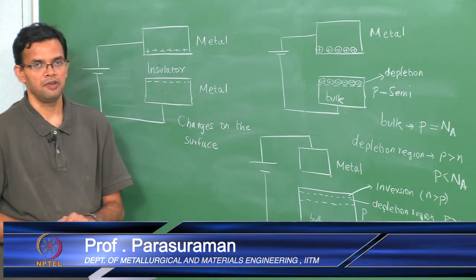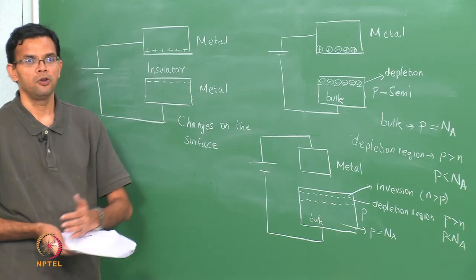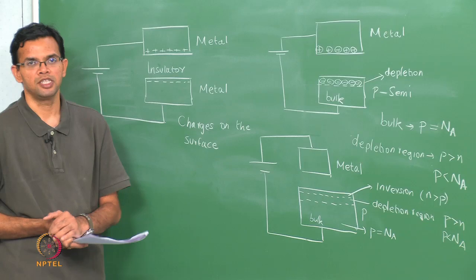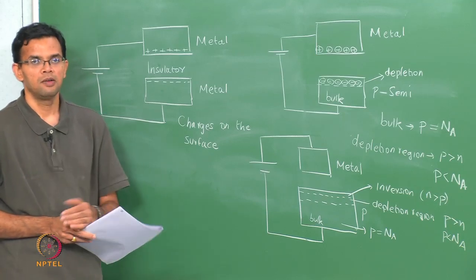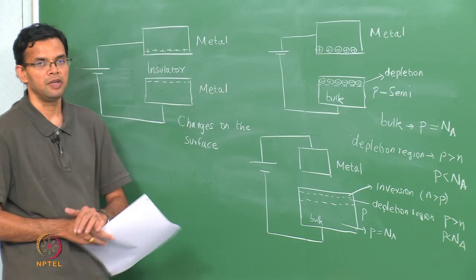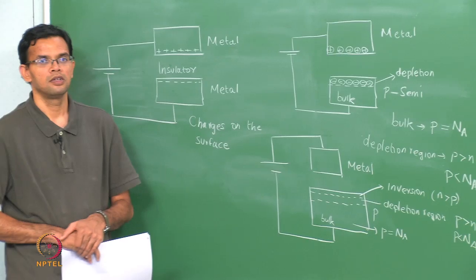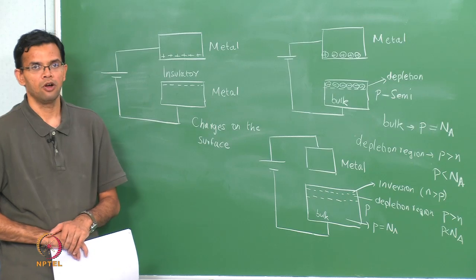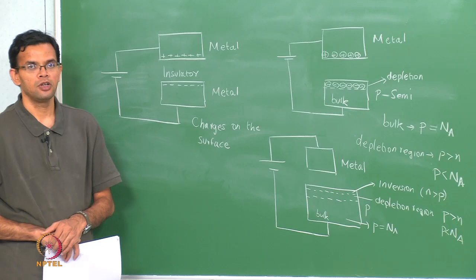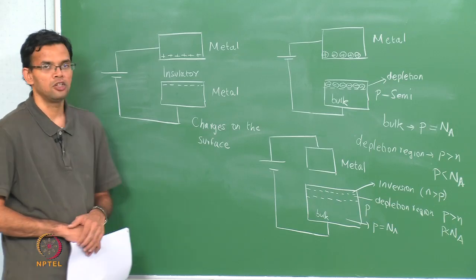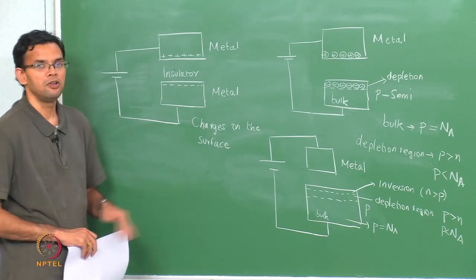The key difference between a JFET and a MOSFET is that in the JFET an N-channel is already present and applying a gate voltage shrinks the channel to control current. In the MOSFET, the channel is formed by applying an external potential, and increasing that potential increases the channel width, controlling the current. In the next class we will look at the working of a MOSFET in detail, including the I-V characteristics and calculations of depletion and inversion region widths.